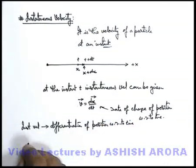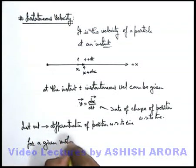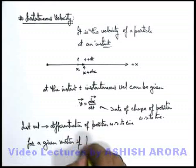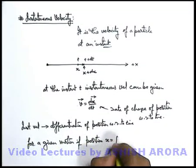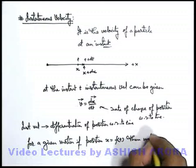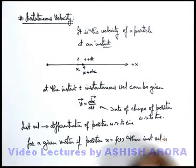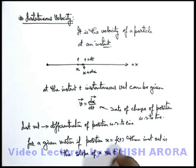Or we can also write for a given motion, if position is defined as position x is given as a function of time, then instantaneous velocity is the slope of x versus time curve.